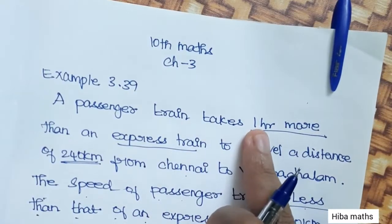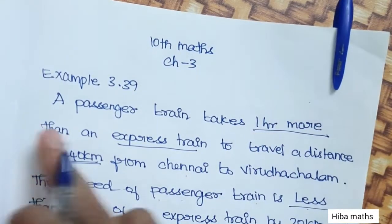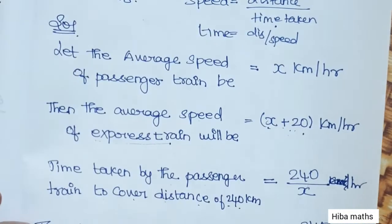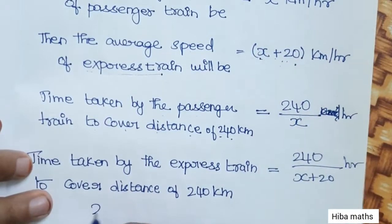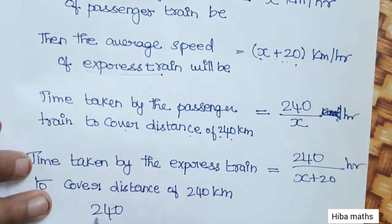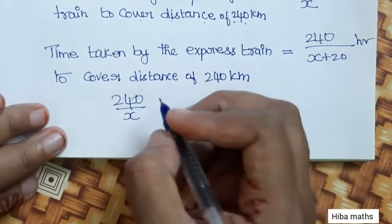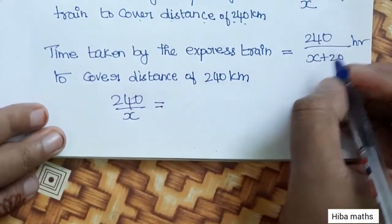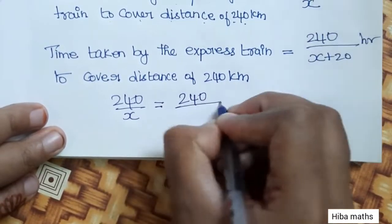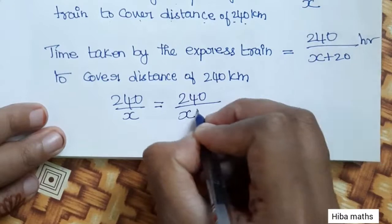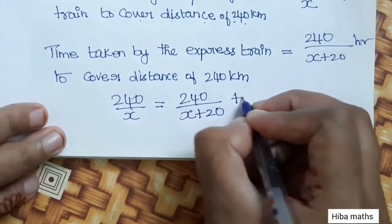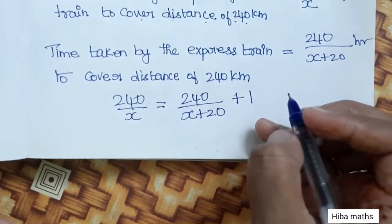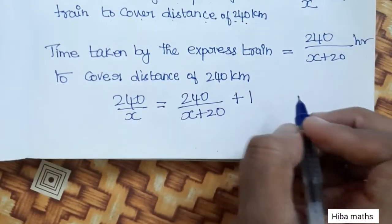The passenger train takes 1 hour more than the express train. So: 240 divided by x equals 240 divided by x plus 20, plus 1 more hour. That means time is plus 1.